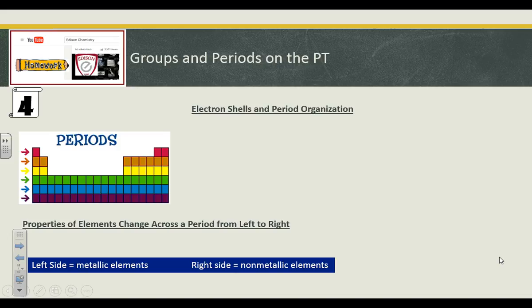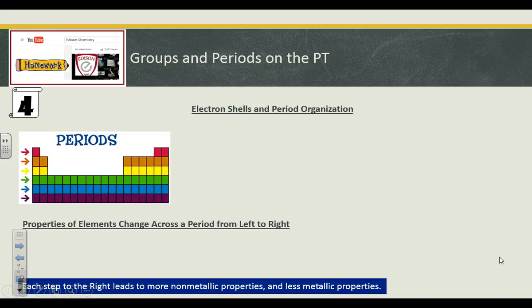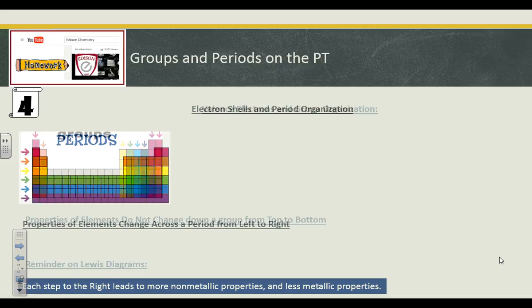The left side of the periodic table is mostly the metallic elements, and the right side is mostly the non-metallic elements. So as you go from left to right, you're becoming more non-metallic each step of the way. You take an element that was super metallic, like sodium, and each step you take to the right, past magnesium to aluminum, silicon, phosphorus, chlorine, or argon, you're going to become more non-metallic. Each element to the right is more non-metallic and less metallic as you go.